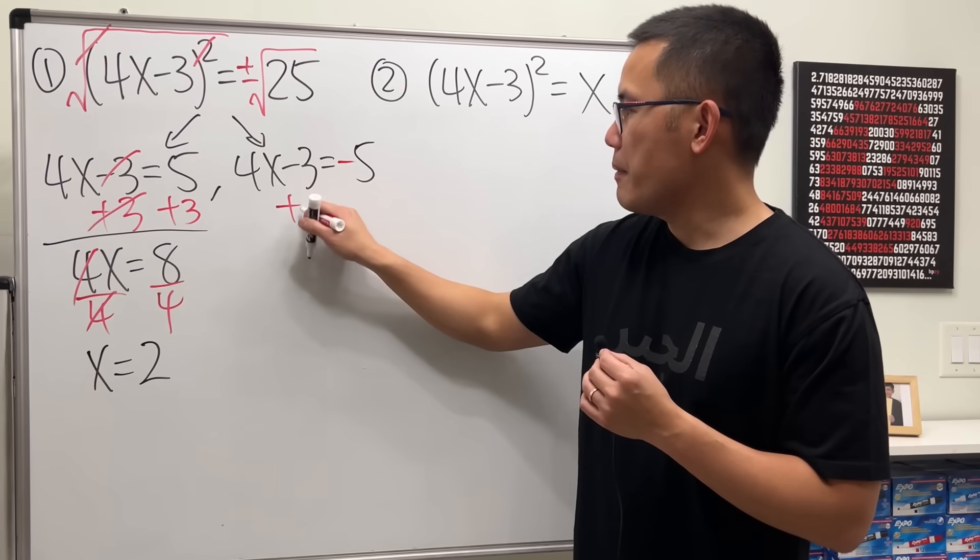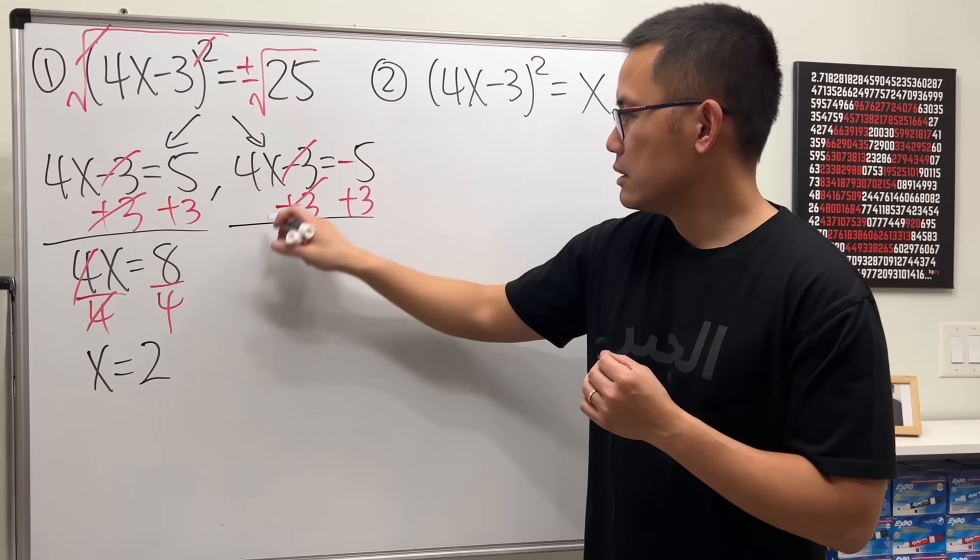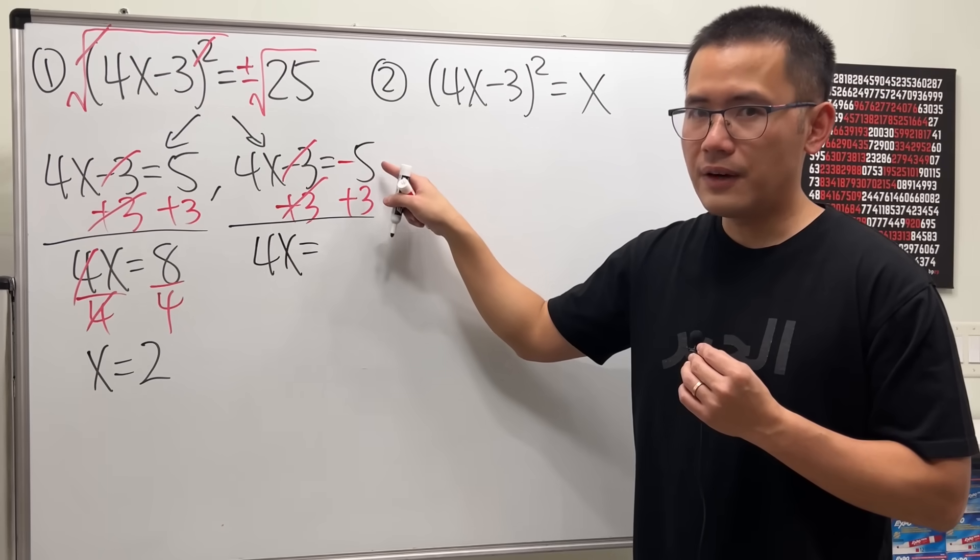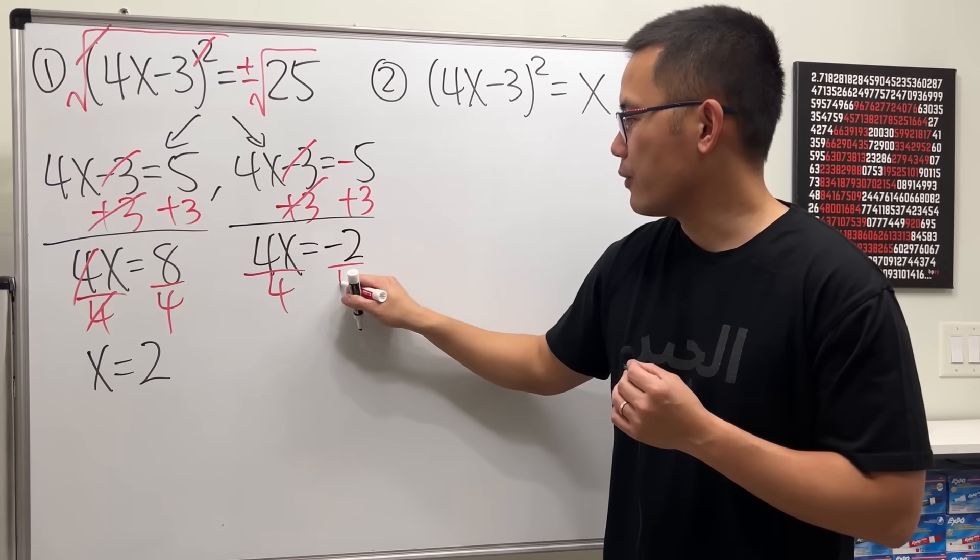So x equals 2. As for the second one, same thing. We add 3 to both sides. This is 4x equals, here we get negative 5 plus 3, which is negative 2.